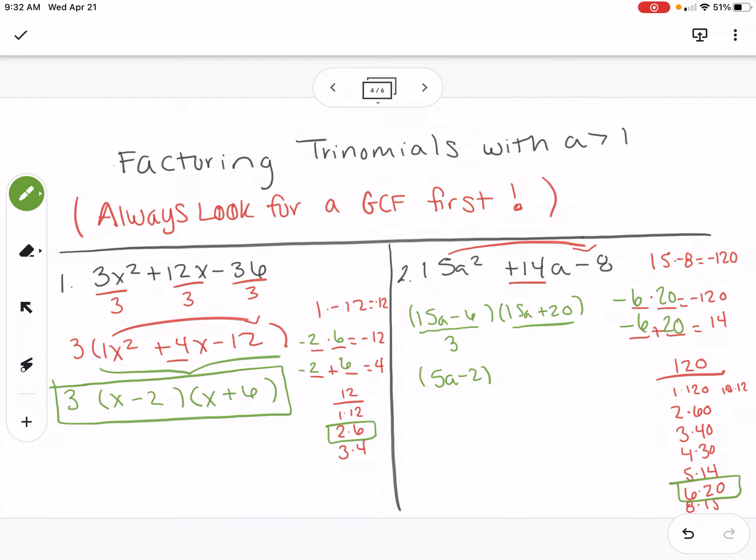This one, 15 and 20 can be divided by 5. You do that, you end up with 3a plus 4. So these are your factors, and now it makes sense. 5a times 3a is 15a squared. 2 and 4 is 8. So now it looks like this would multiply out to give us what we started with.